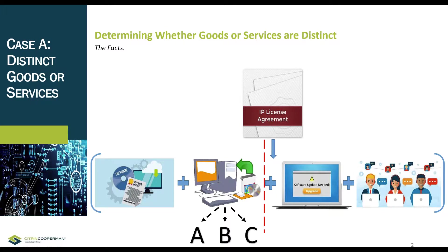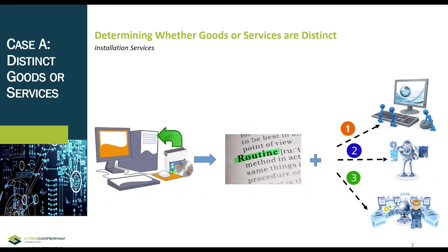Best Software determines the customer can benefit from the updates together with the software license transferred at the start of the contract. The company concludes that the customer can benefit from each of the goods and services either on their own or together with other goods and services that are readily available. The installation services do not significantly affect the customer's ability to use and benefit from the software license because they are routine in nature and can be obtained from various alternate providers. Therefore, the promise to transfer installation services is also separately identifiable from each of the other promises.